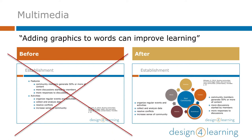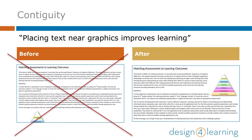Try to add visuals whenever you can. The principle of contiguity often relates to issues of scrolling on a device. If a learner has to scroll down to see an image and they can no longer see the related text,